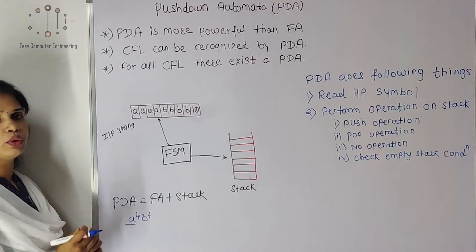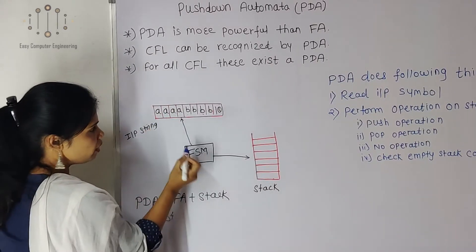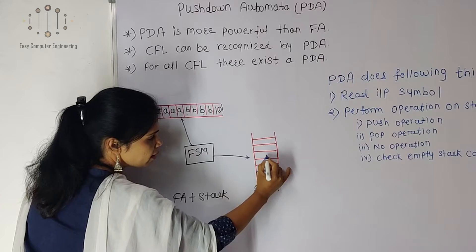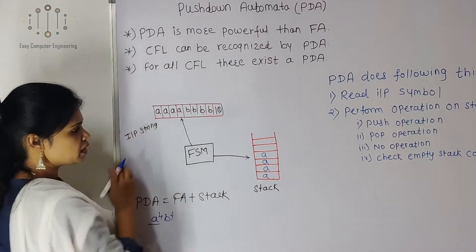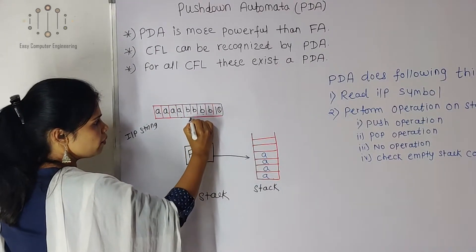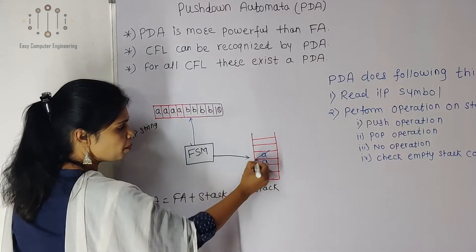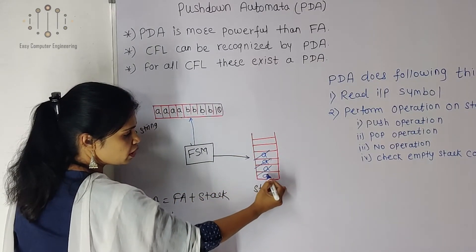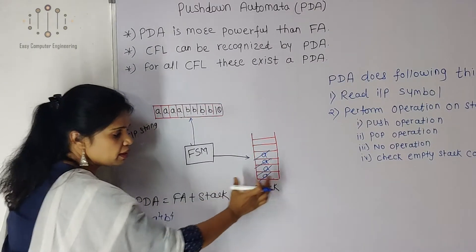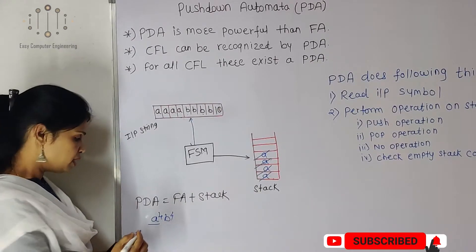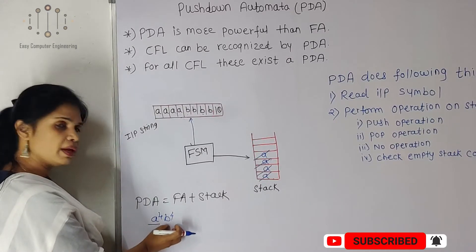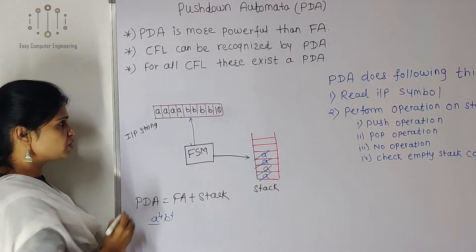We read the input string character by character using a pointer (sigma). For every A character, we push it into the stack. Then for every B, we pop one A — pop 1, 2, 3, and 4. If we reach the empty stack at the end of the string, the string is accepted, meaning it follows Aⁿ Bⁿ — in this case A⁴ B⁴ is accepted.